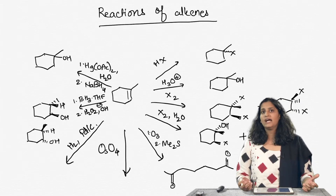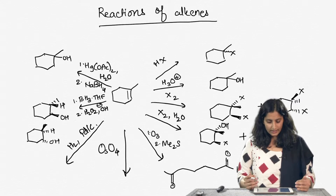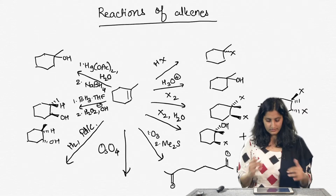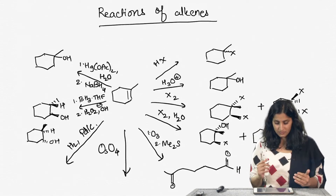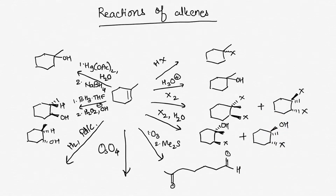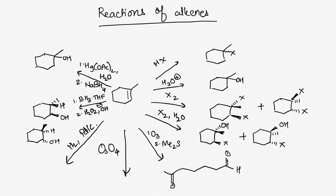We have covered various reactions of alkenes so far, and here I am summarizing all of them. We have seen the reaction of alkenes with HBr, bromine (Br2), Cl2, halohydrin formation (bromine reacting with water), ozonolysis, and hydrogenation where in the presence of palladium or platinum catalysts, hydrogen gets added across the double bond.